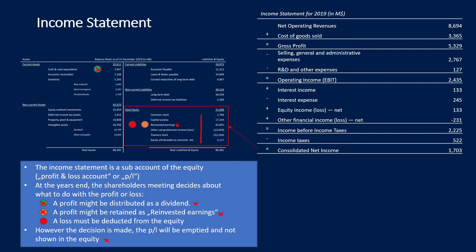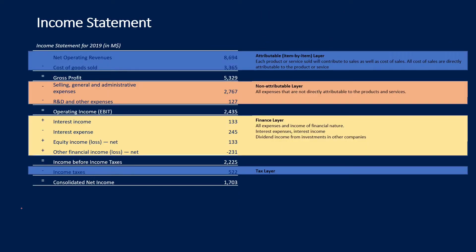Let us have a little overview over the layers of the income statement. These are the layers of a typical income statement. The first layer is the attributable or item-by-item layer. In this layer we see the net operating revenues, or simply sales, and deducted from those sales we see the cost of goods sold. In between all those layers we see intermediate results — revenues minus cost of goods sold gives the gross profit, which is our first in-between result.